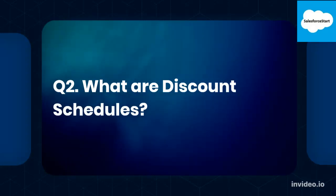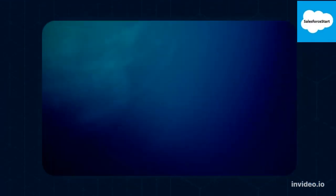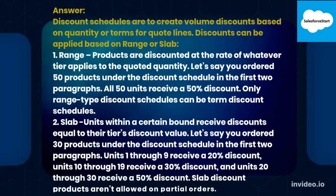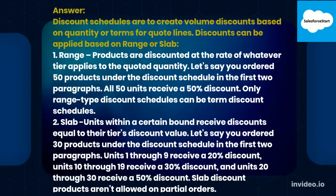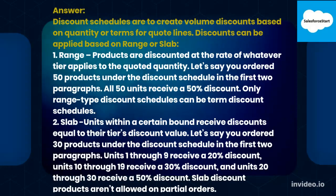Q2. What are Discount Schedules? Answer. Discount Schedules are used to create volume discounts based on quantity or terms for Quote Lines. Discounts can be applied based on range or slab. 1. Range: Products are discounted at the rate of whatever tier applies to the quoted quantity. For example, if you ordered 50 products, all 50 units receive a 50% discount.